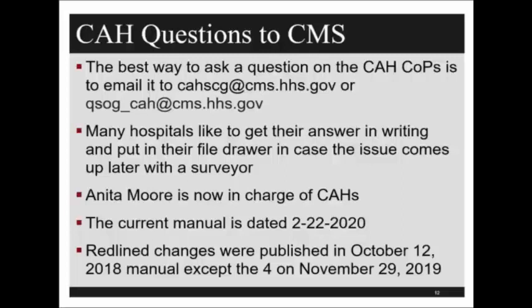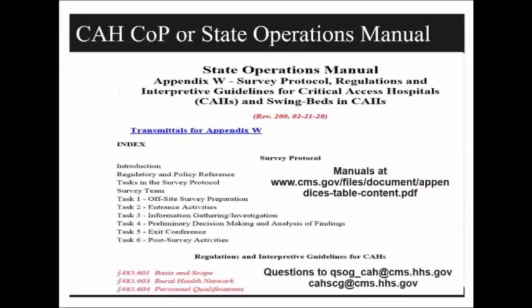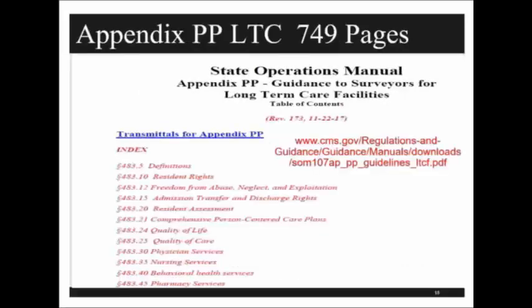The current manual is dated as of February 22nd of this year. Redline changes — showing what was old and what was new — were put in during October 2018, and the manual also has updates from November 2019. The swing bed regulations were rewritten in 2018, and the State Operations Manual for the critical access hospital shows what has been updated in red. Appendix PP for long-term care also underwent extensive revisions, new as of 2017.